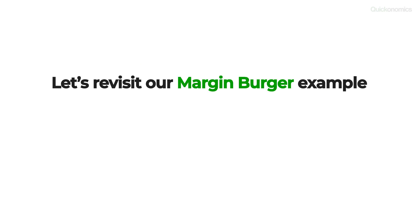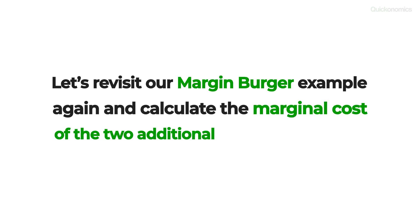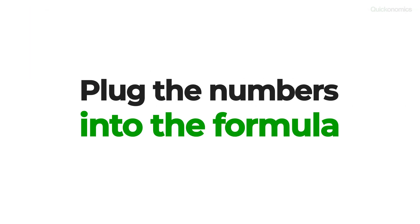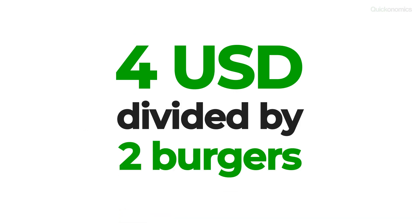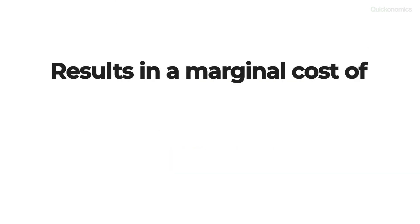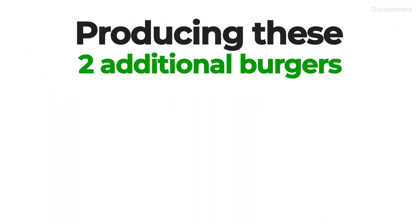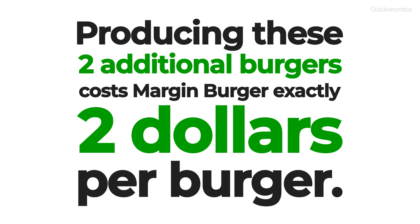Let's revisit our Margin Burger example and calculate the marginal cost of the two additional burgers sold today. If we plug the numbers into the formula, we find that the change in cost of $4 divided by the two additional burgers results in a marginal cost of $2. In other words, producing these two additional burgers costs Margin Burger exactly $2 per burger.